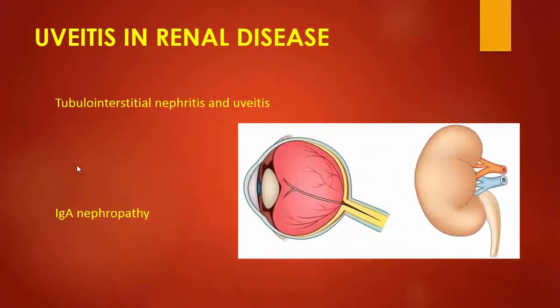Uveitis in renal disease: uveitis can occur in certain renal diseases like tubular interstitial nephritis and uveitis (TINU) and IgA nephropathy.